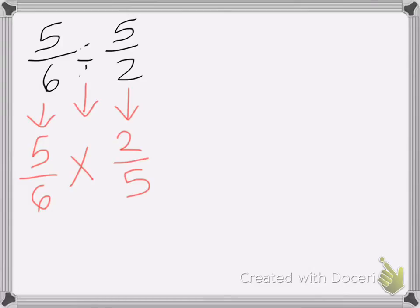So now I can work on reducing. The 5s reduce, they both become 1s. And then I can reduce the 2 and the 6. The 2 becomes a 1 (2 divided by 2 is 1), and 6 divided by 2 is 3. So I end up with 1/3 times 1, which is equal to 1/3.